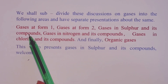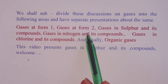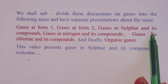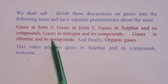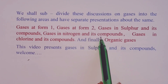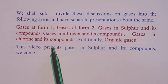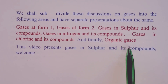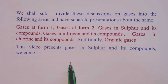We shall have gases at form one level, and gases at form two. We will have a presentation on gases in sulfur and its compounds, another on gases in nitrogen and its compounds, followed by gases in chlorine and its compounds, and finally a discussion on organic gases. This video presents gases in sulfur and its compounds.